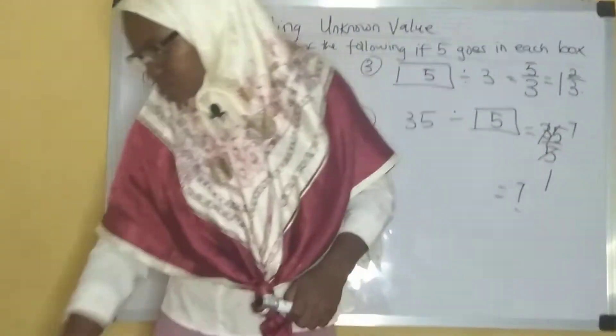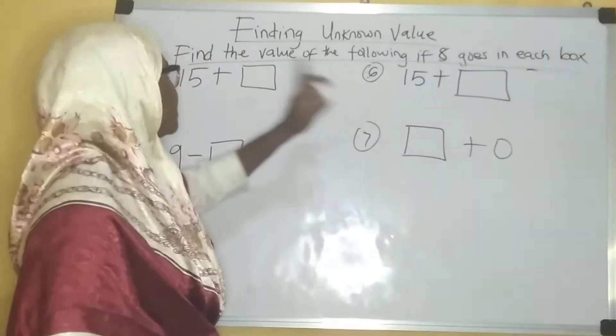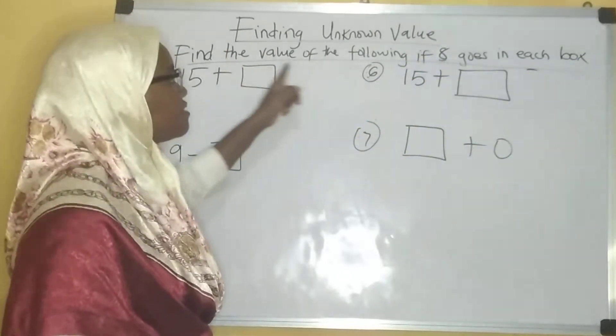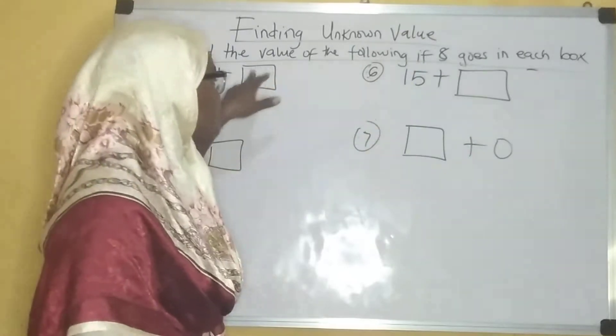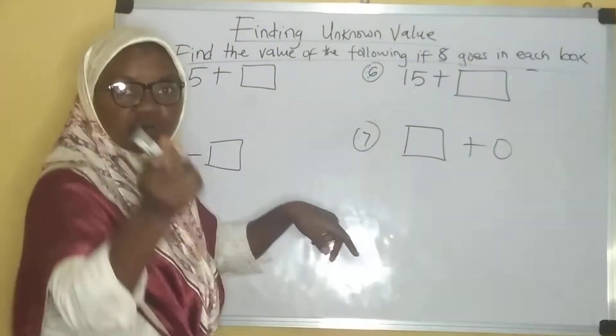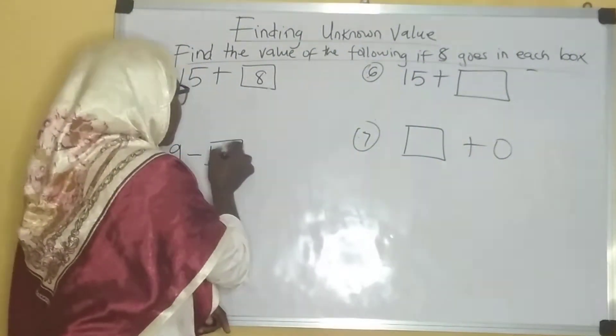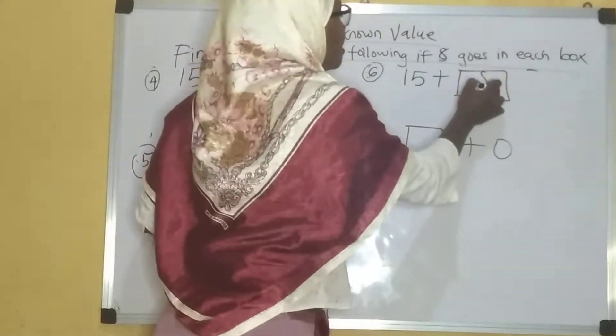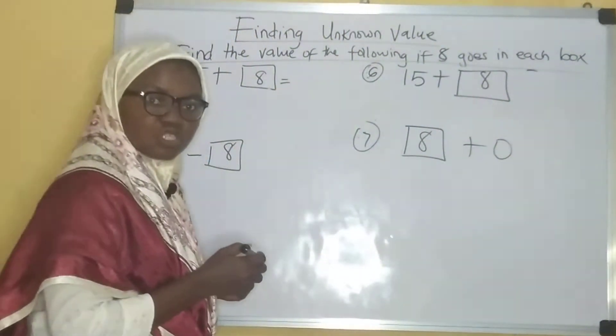Now let's take more examples. Let's look at example four. In this case, we are asked to find the value of the following if eight goes into each of these boxes. Let's see what we are going to get. First, let's put eight in all the boxes first: eight, eight, eight, and eight.